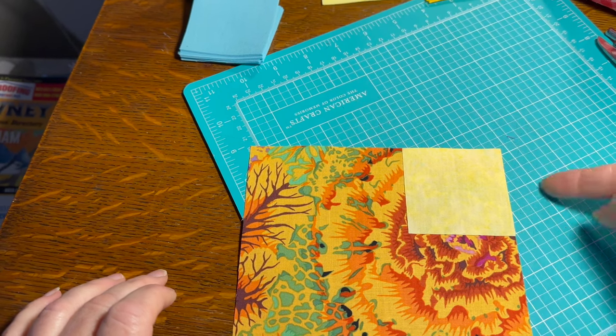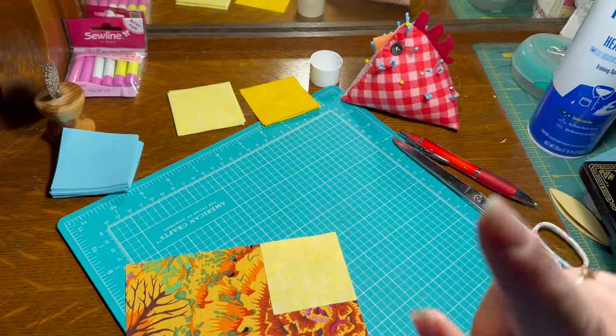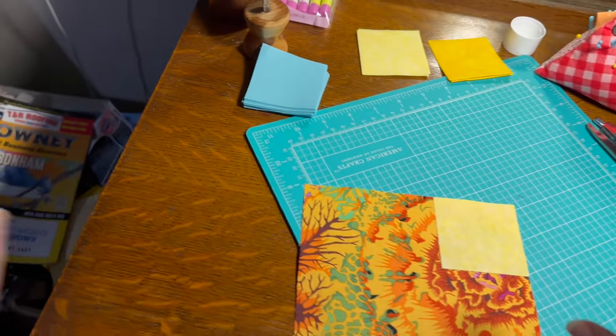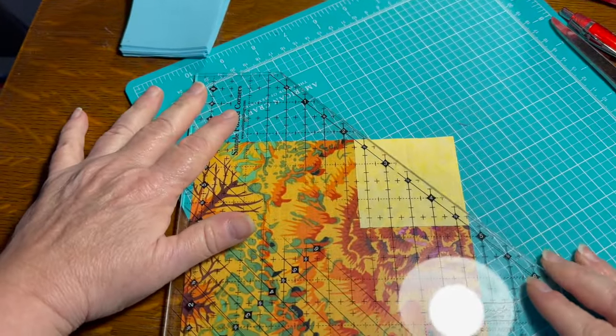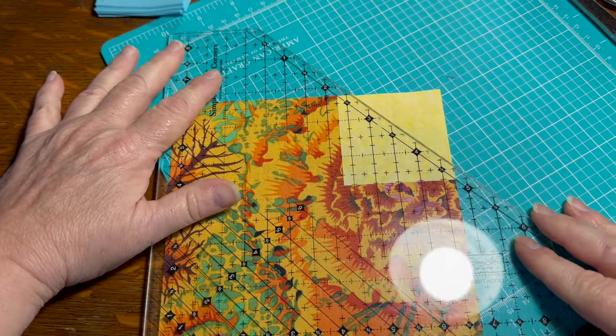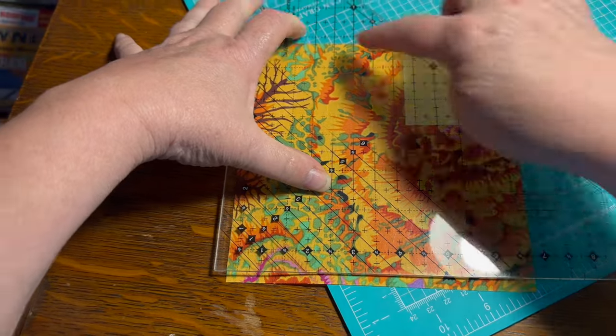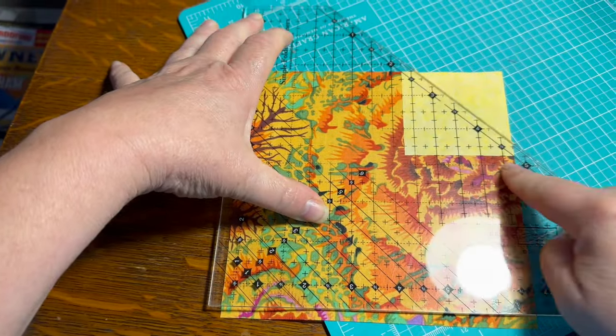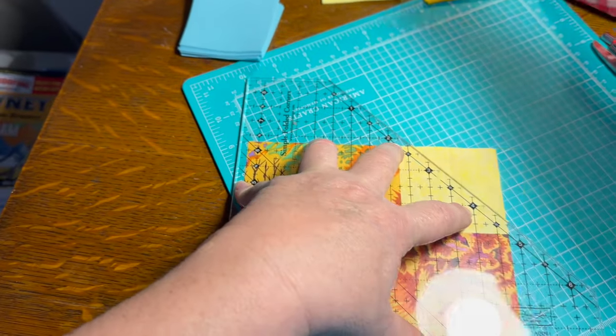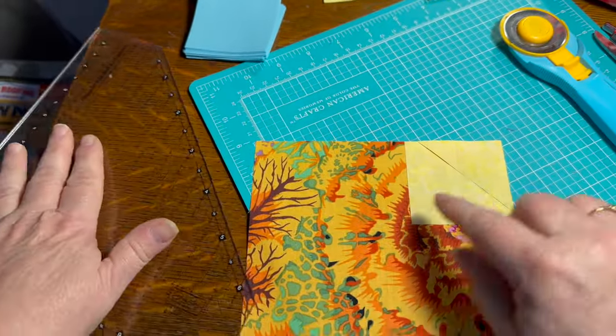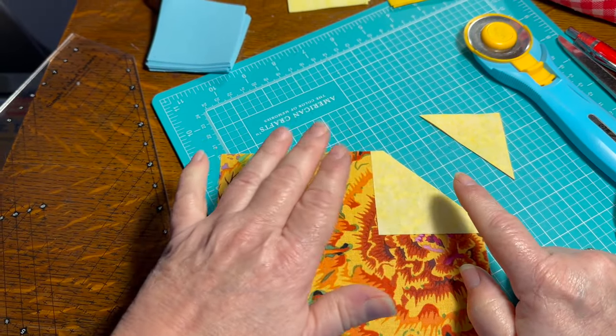Then I'm just going to do the covered corner method where you would draw a line and then you would sew just on this side of the line, like a thread width. But for those of you who have the covered corners ruler you could use that. I'm going to line mine up so I'm lining up this edge and this edge and hopefully holding this down. Yes, I got a good cut and now I will sew this covered corner.